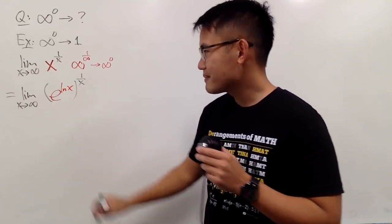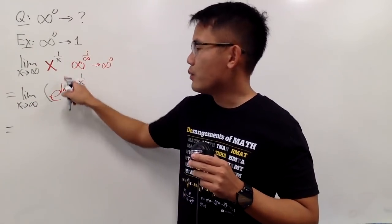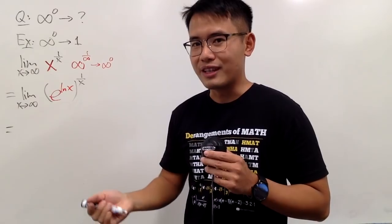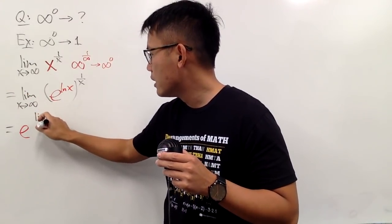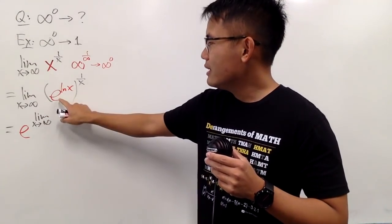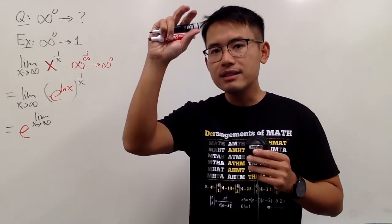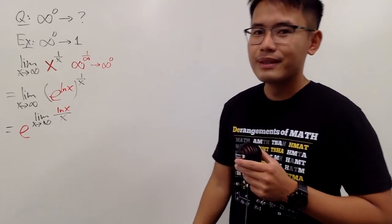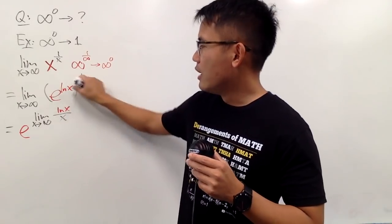Since e to the whatever is a continuous function, I can focus on taking the limit of just the exponent. So I write e on the outside and then take the limit as x approaches infinity of the exponent. Multiplying the powers: ln x times 1 over x is just ln x over x. So I put e on the outside and focus on the limit of ln x over x.